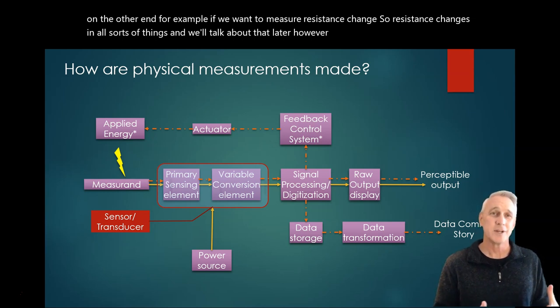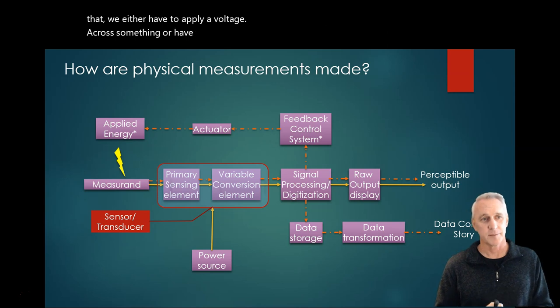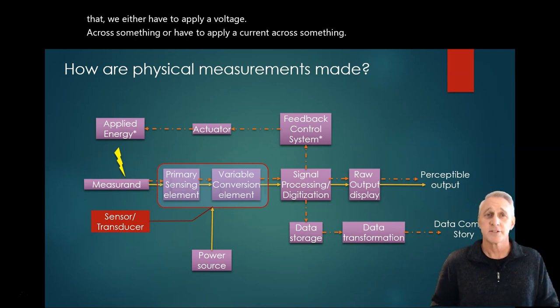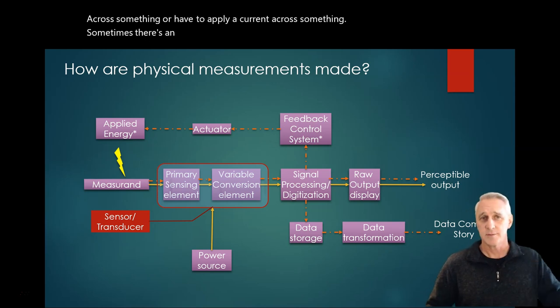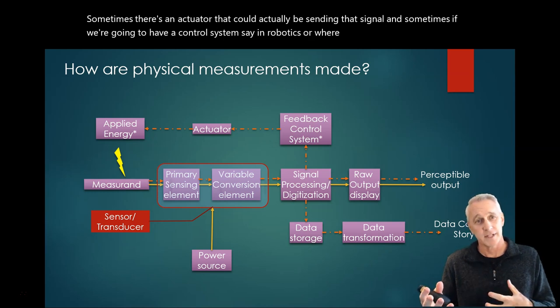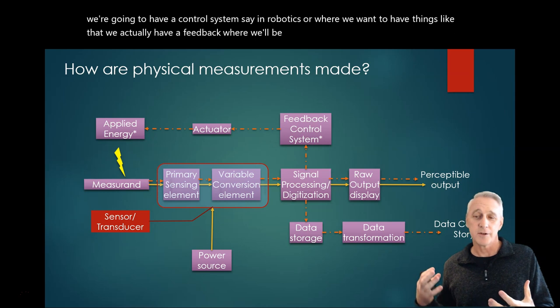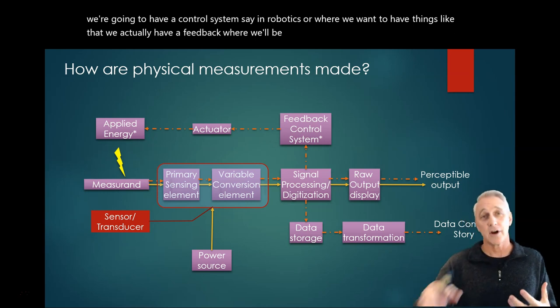However, to be able to measure that, we either have to apply a voltage across something or have to apply a current across something. Sometimes there's an actuator that could actually be sending that signal, and sometimes if we're going to have a control system, say in robotics, we actually have a feedback where we'll be taking signals, monitoring what we're doing, and then making adjustments, either automatically or programmatically after the fact.